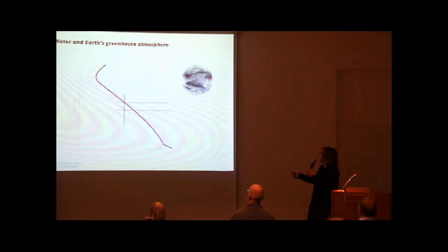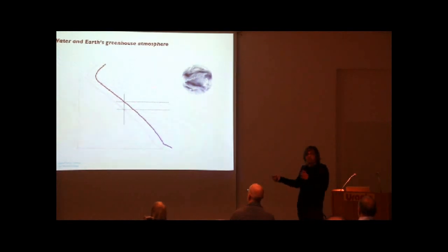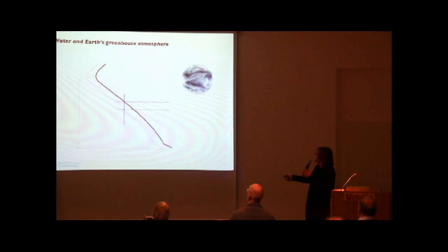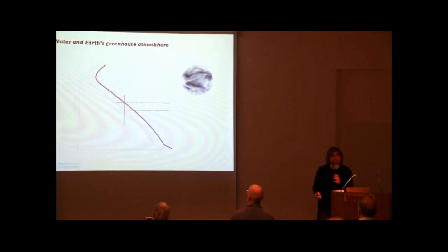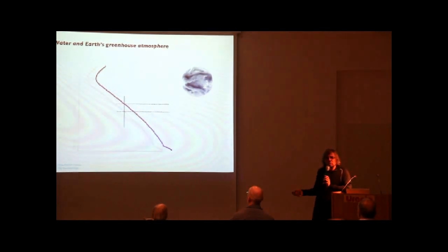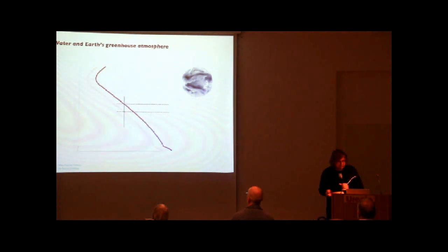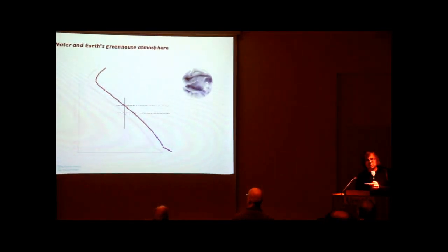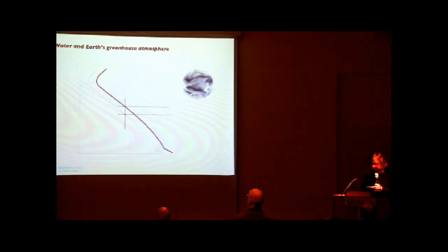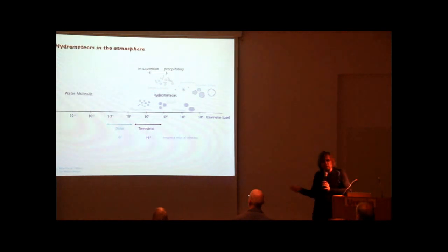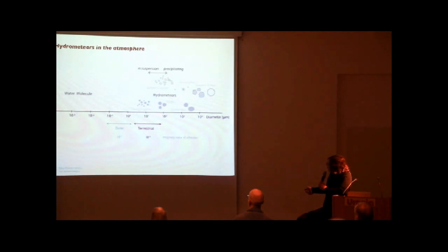Water is the main greenhouse gas controlling the energy budget. The stratification of the atmosphere — the fact that it's stratified with height — also comes from the radiative properties of water vapor. Now let's look at the other side: condensed water and how it interacts with radiation in the visible. Most of what we've discussed is water vapor; now, how does condensed water interact with radiation?